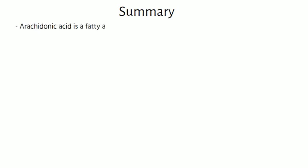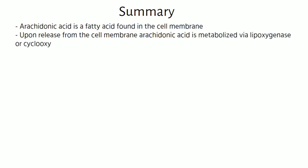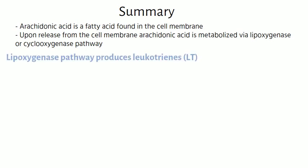In summary, arachidonic acid is a fatty acid found in the cell membrane. Upon release from the cell membrane, arachidonic acid is metabolized via the lipoxygenase or cyclooxygenase pathway, depending on cell type and enzymes present.